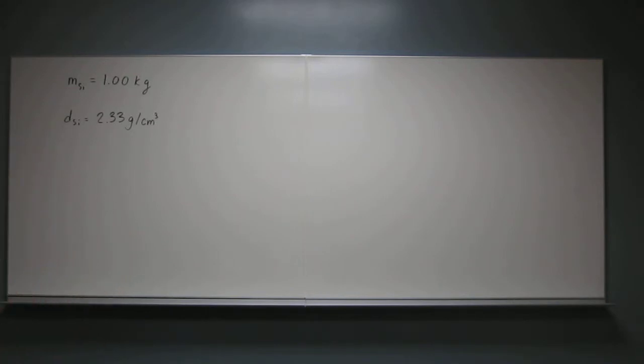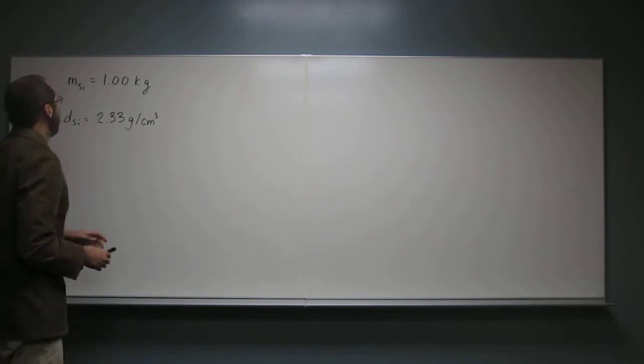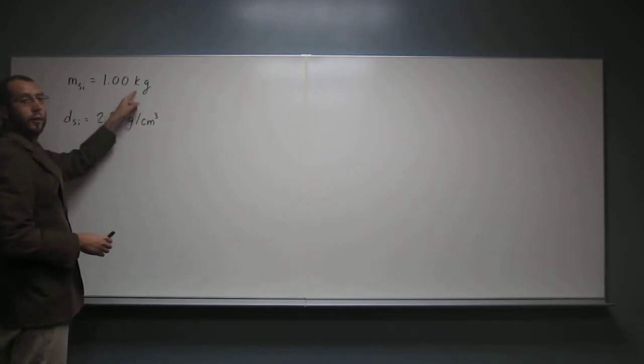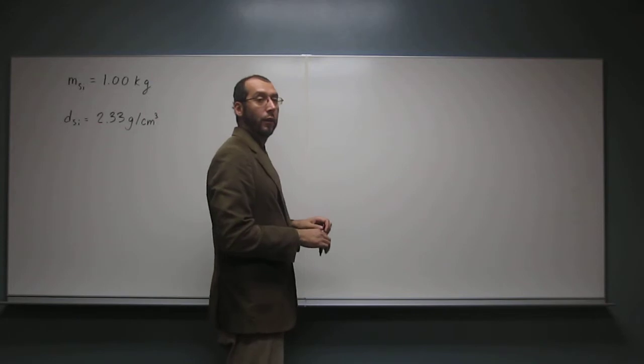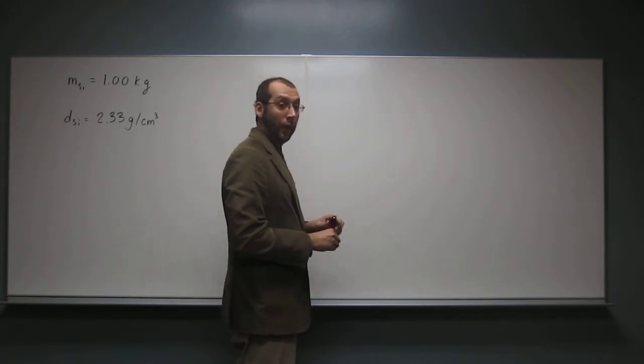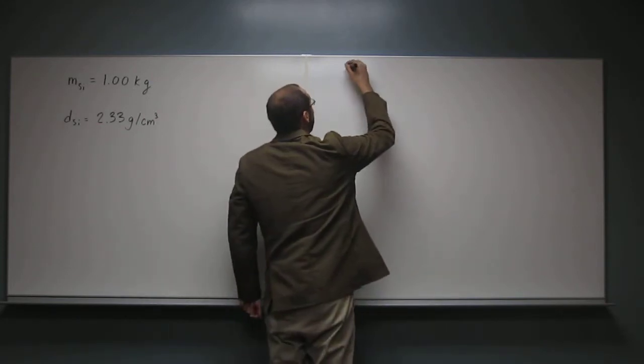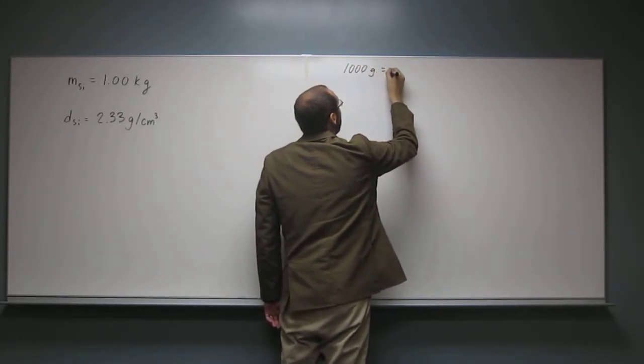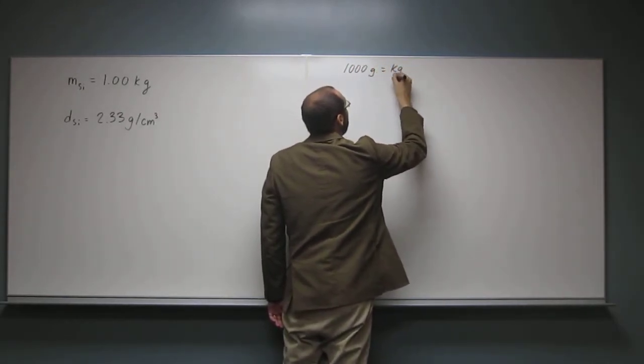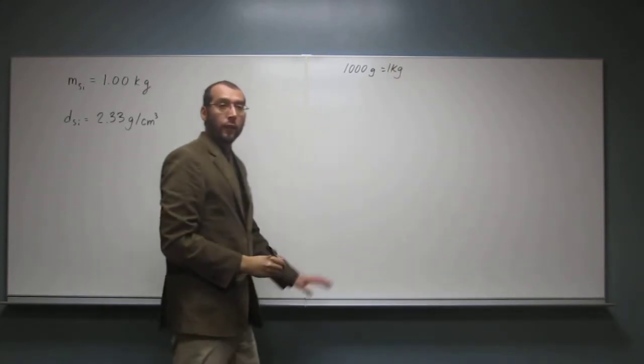So you need to know a couple of conversion factors. We have grams here and kilograms here, so we're going to need to know the conversion factor between grams and kilograms. So how many grams are there in one kilogram? A thousand. A thousand. So let's write that down first. So 1,000 grams equals one kilogram, like that, okay?